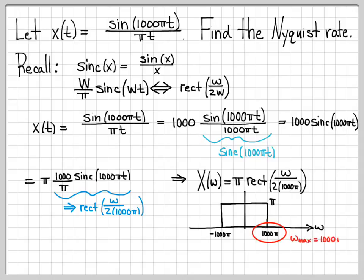So now it's really easy to tell what the maximum frequency content of this signal is. I can just look at it. The maximum radial frequency is a thousand pi. So this means the maximum linear frequency is omega max over two pi, or a thousand pi over two pi, which is 500 hertz. So the signal x of t that we were given has a maximum frequency of 500 hertz.